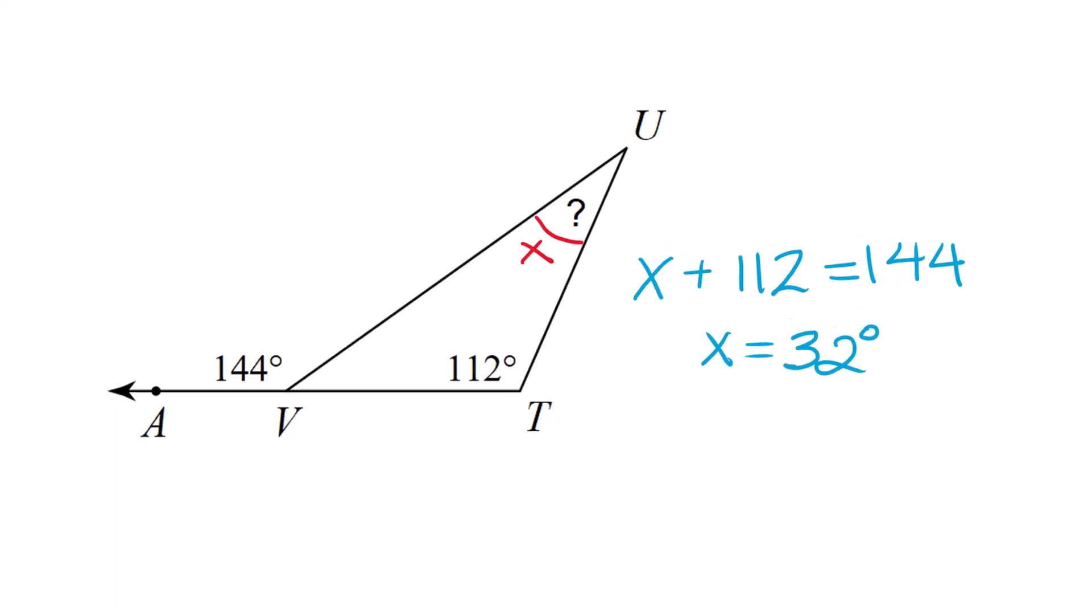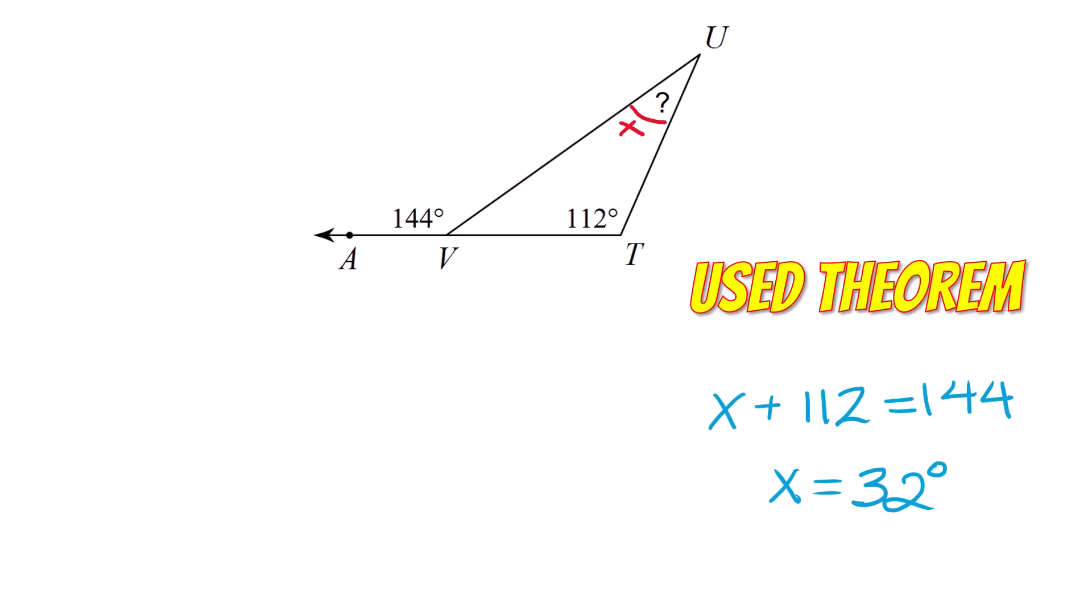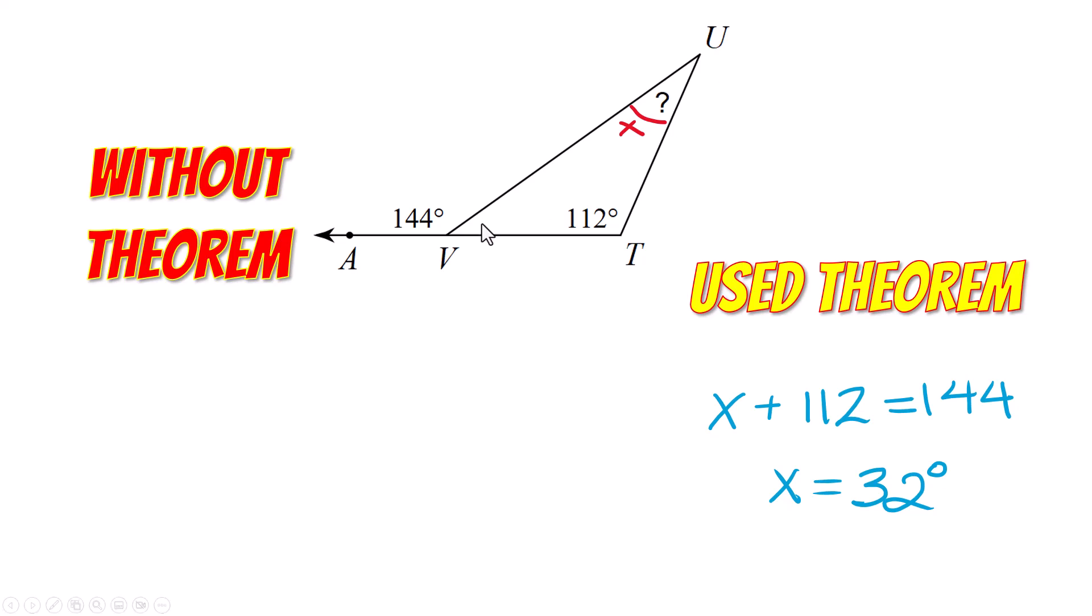Well just to prove my point, we just did that using the exterior angle theorem. What if you forgot it? This is how you would do that problem. You would use the triangle sum theorem, but you'd have to start by trying to find this angle that's sitting right next to the 144. So you'll subtract that from 180. That's 36. Then now we know from the triangle sum theorem that all the angles inside of a triangle add up to 180 as well.